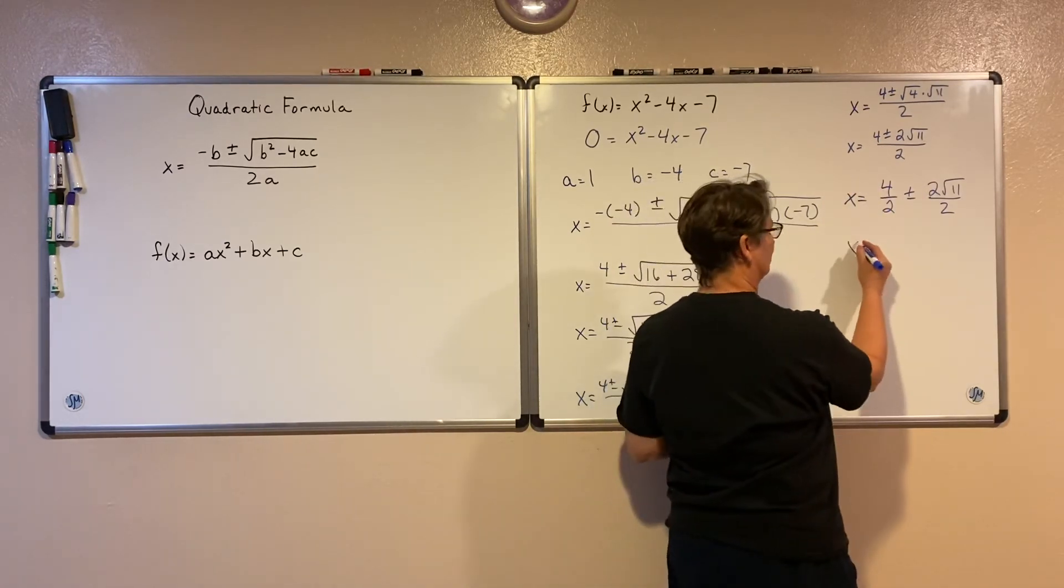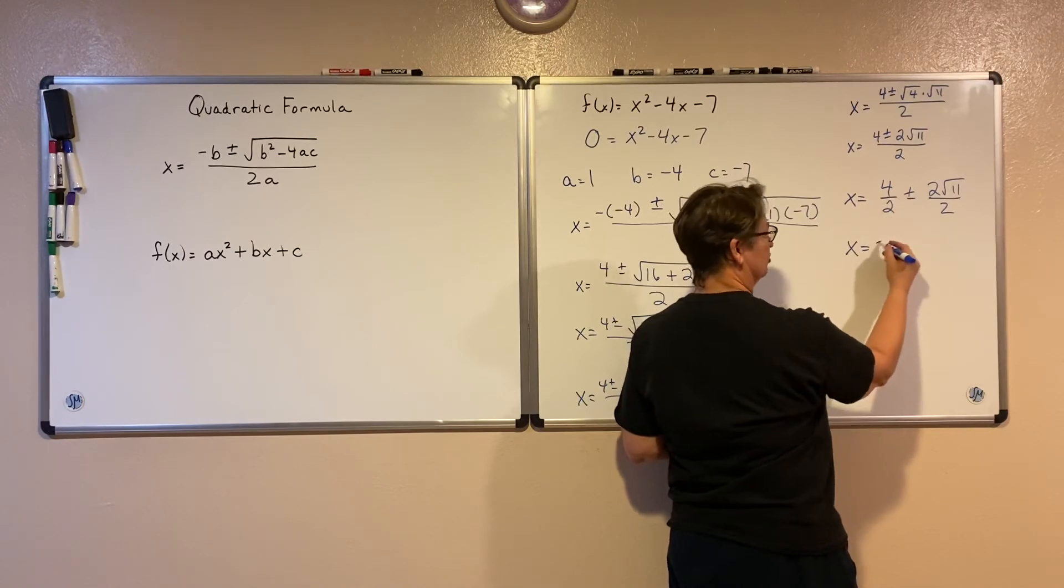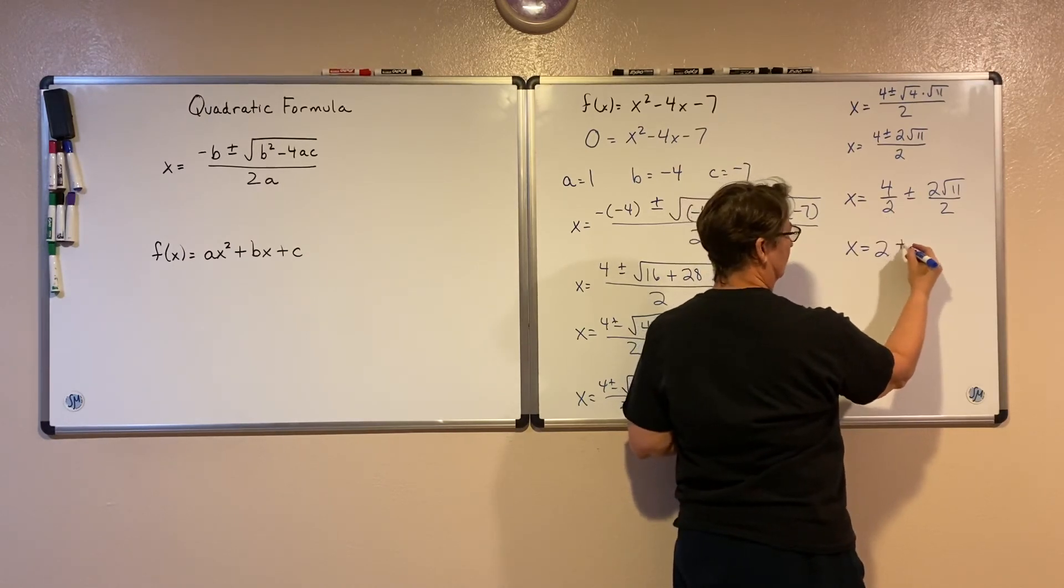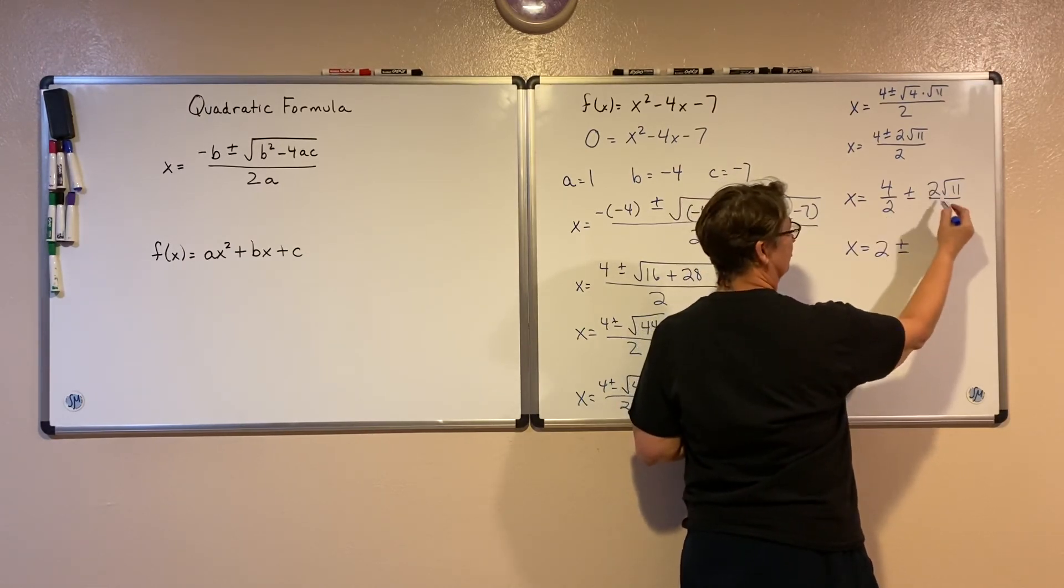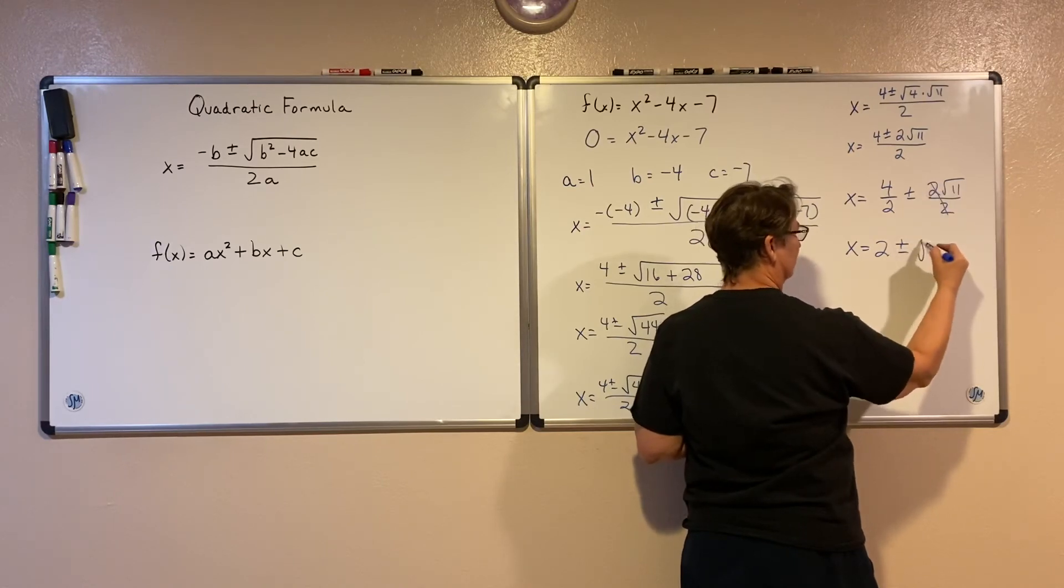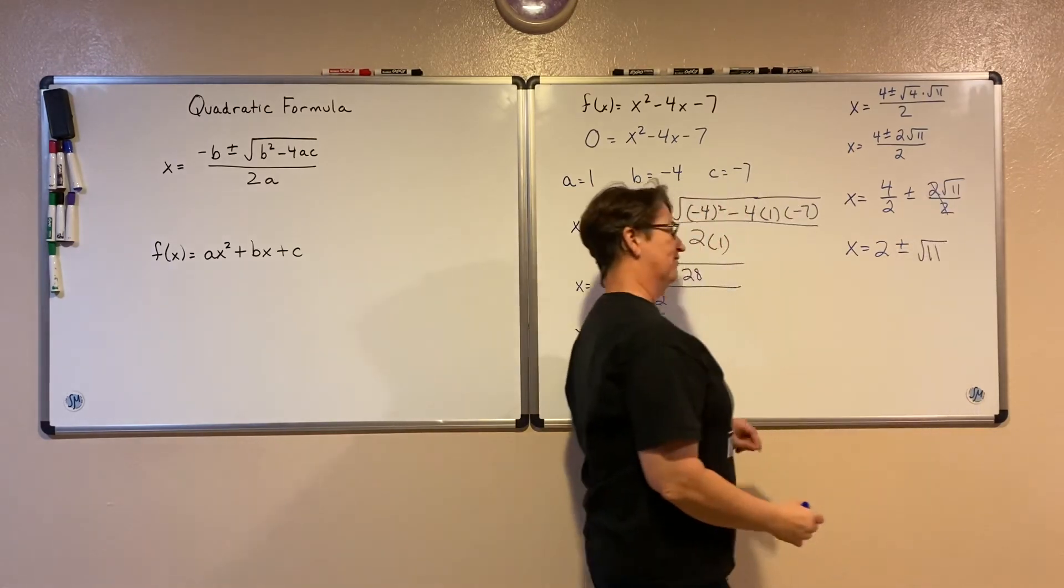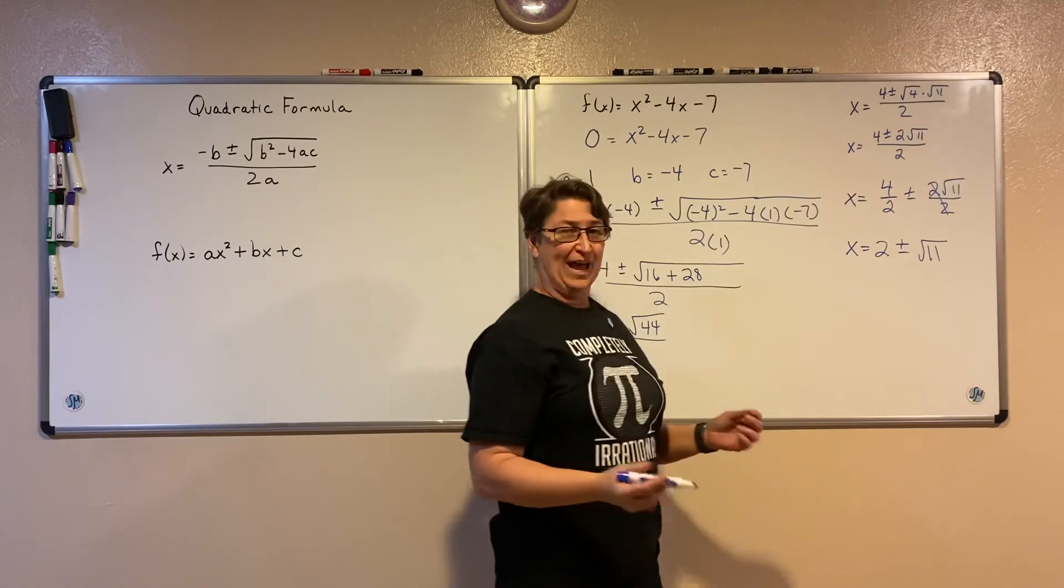Now I can simplify each part. 4 divided by 2 is 2, plus or minus this 2 divided by that 2 is 1, so it leaves me with the square root of 11. So I have two different answers here.